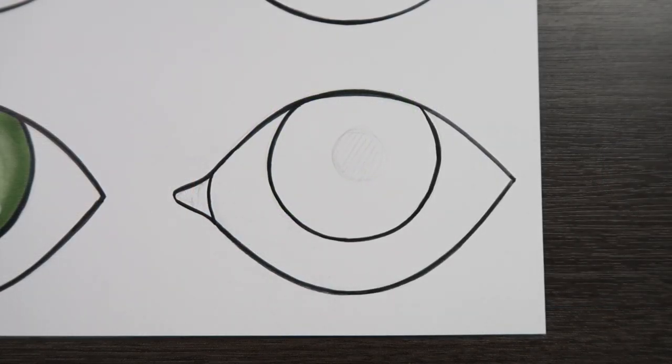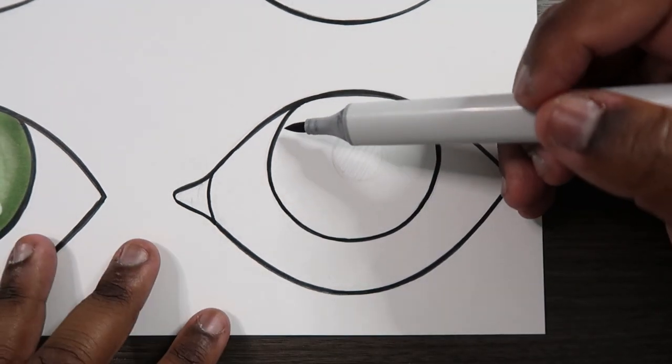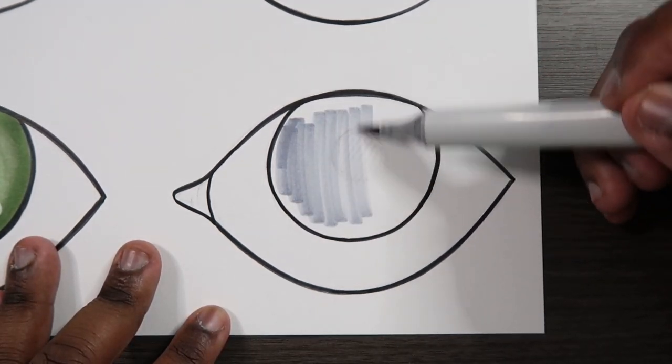All right. So in terms of gray markers I have my C5 here. And that's our base color. So let me color the iris in with this C5.